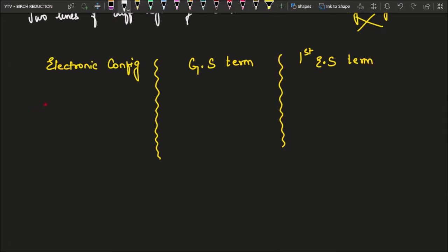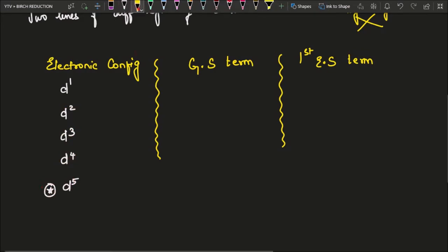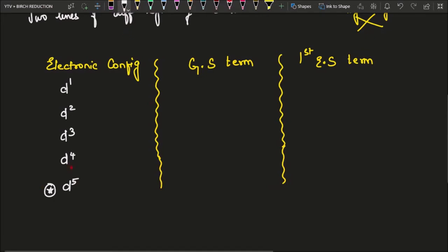The electronic configurations go D1, D2, D3, D4, and then D5. We will also remember the ground state term symbol for D5. Then when you start from D6, it comes alongside D1. So: D6, D7, D8, and D9. You can remember them as pairs: D1 and D9, D2 and D8, D3 and D7, D4 and D6 — they will have the same ground state term.